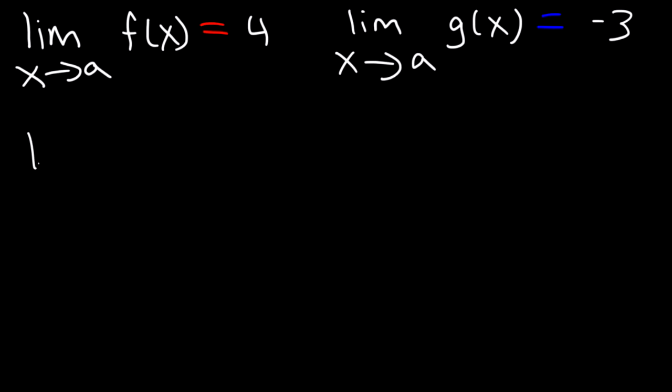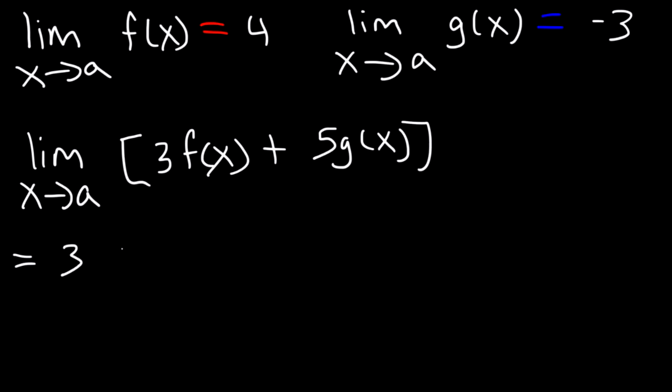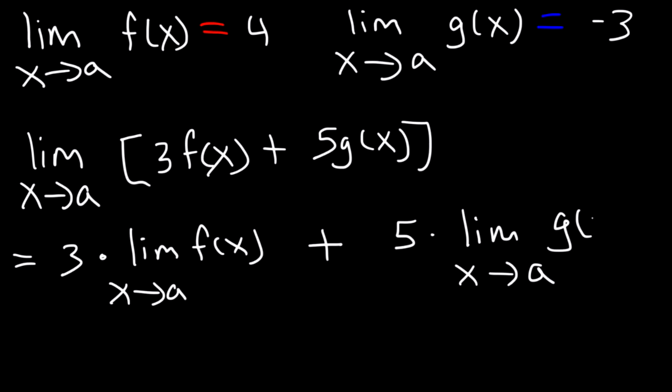Here's another one. What is the limit as x approaches a for this expression: 3 f of x plus 5 g of x? So, let's rewrite it. This is equivalent to 3 times the limit as x approaches a of f of x plus 5 times the limit as x approaches a of g of x.